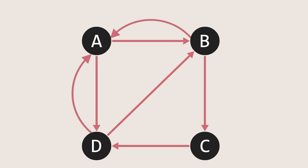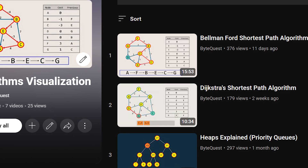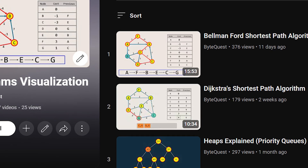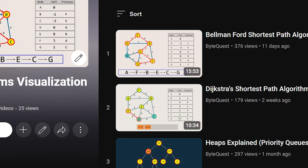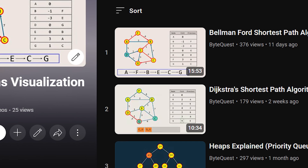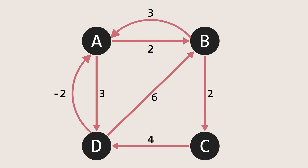Let's understand how the Floyd-Warshall algorithm finds the shortest path between any two pairs of nodes in a graph. Earlier, we've seen single-source shortest-path algorithms like Dijkstra's and Bellman-Ford. If you're not familiar with those, I suggest checking them out first, as they provide a solid foundation for understanding shortest-path algorithms. Those algorithms are designed to find the shortest path from a single-source node to all the other nodes — for example, from node A to all the other nodes in the graph.